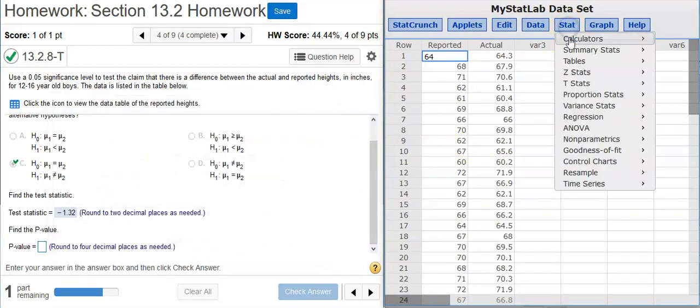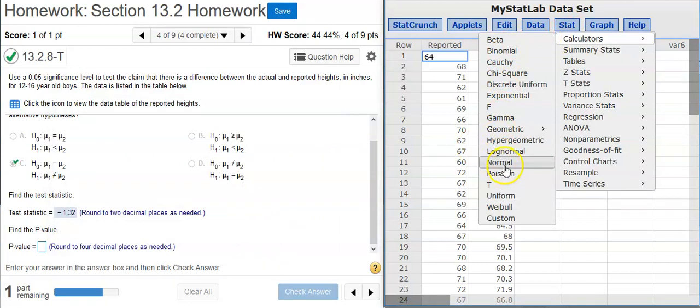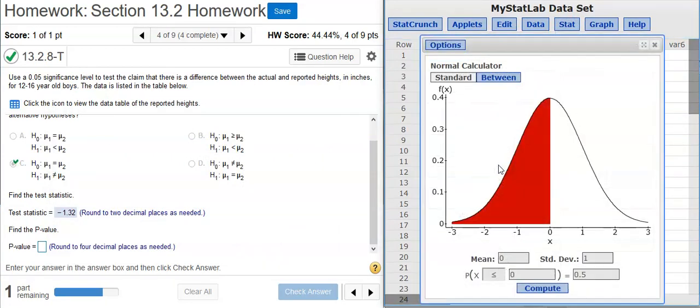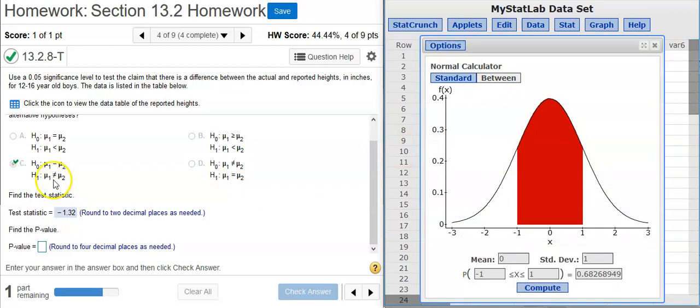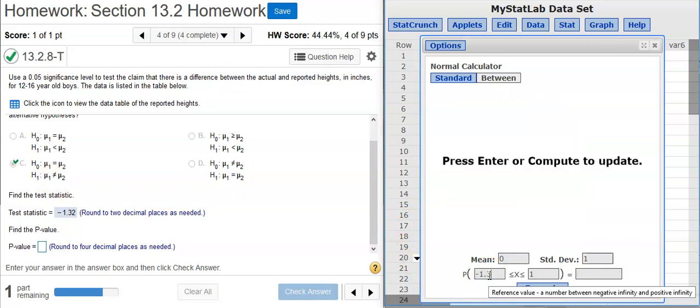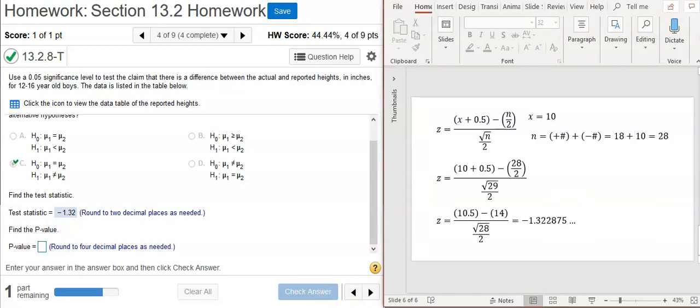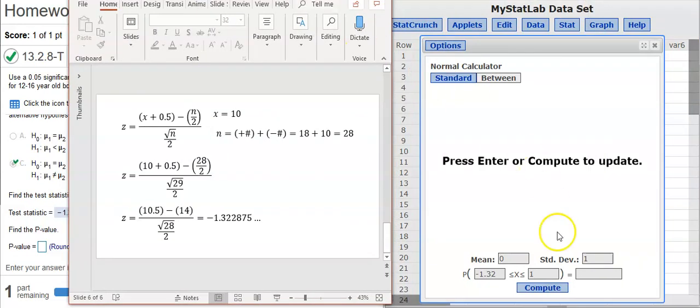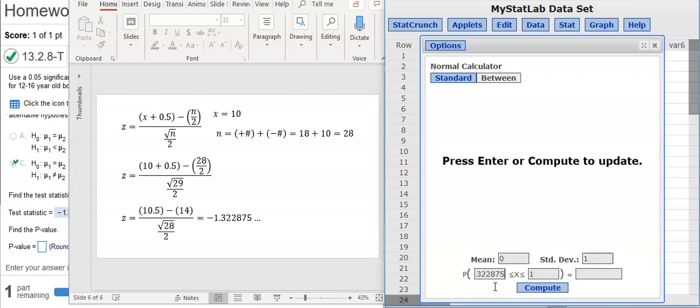So here in StatCrunch I want to go to Stat, Calculators, Normal. Here in my calculator I want to select the between option because as you see here we have a two-tailed test. Here I'm going to put in my test statistics, so on the negative side negative 1.32. And I want to put in all those decimal places that I had before, so let me move this over so I can stick all that in. 1.322875. And I put the positive version of my test statistic here.